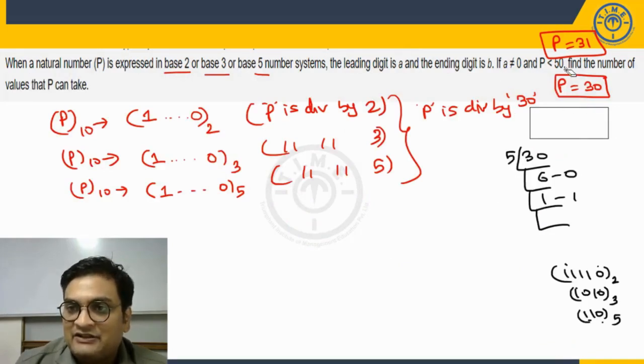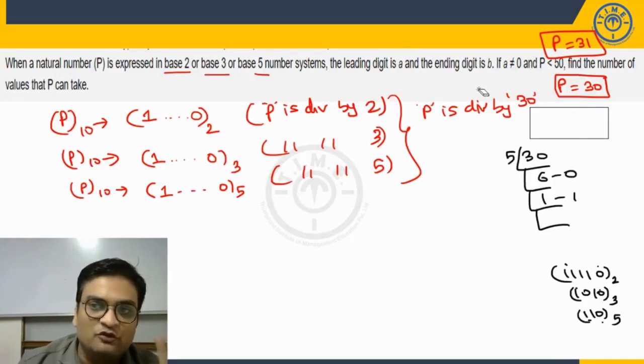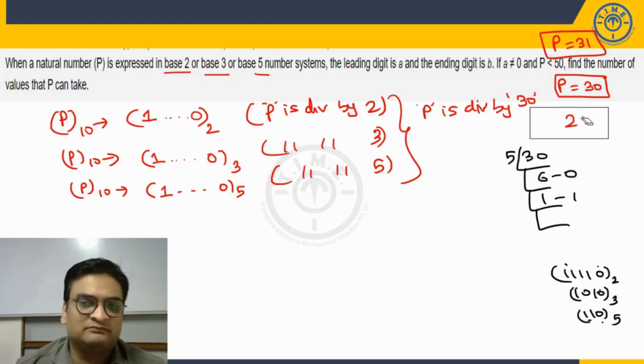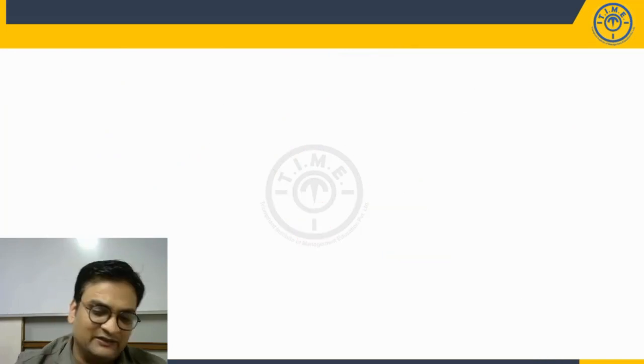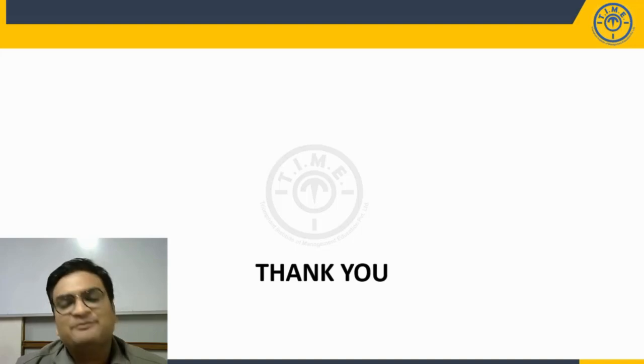Thus, in this range P less than 50, I see there are only two possible values. He is asking find the number of values that P can take, my answer is going to be two. I hope we have followed the logic used in answering this particular question. This was the question that I had for today. On that note, let me end the session here. For more such content, please do subscribe and follow our channel. Thank you and all the very best.